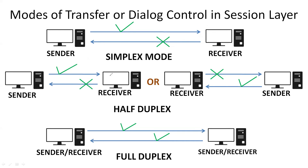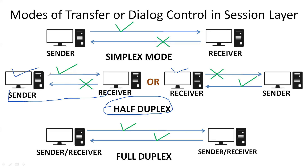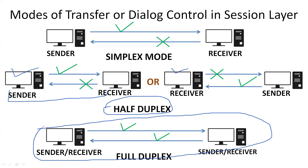In half duplex mode, one PC can be the sender while the other is the receiver, but a sender cannot simultaneously be the receiver. Only one process can happen at a time — either it receives data or it forwards data. In full duplex mode, data transfer can be done at any time from both ends simultaneously, so both devices can send and receive data at the same time.